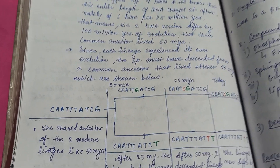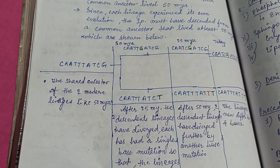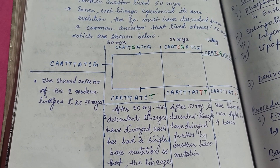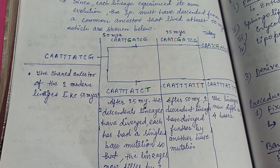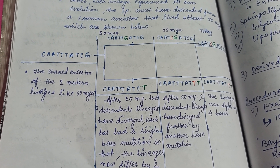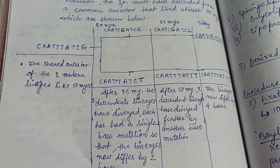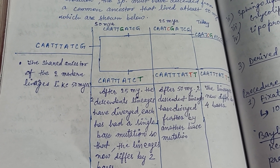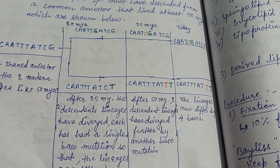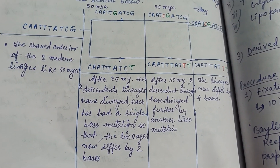Here is another example with a sequence: C-A-T-T-T-A-T-C-G. Before 15 million years ago, there were two base pair changes. After 25 million years, there is a change of C to G and T to T. Today this lineage differs by four bases compared to the original sequence.